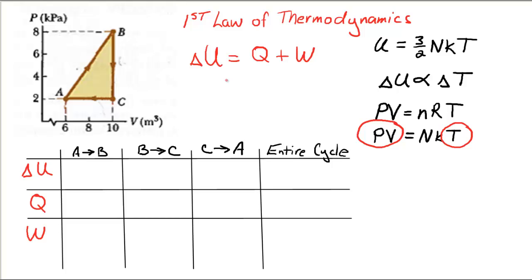So using the product of P times V, we can rank which temperature is the highest, A, B, or C. So if we quickly look at our diagram, we see that PV at location A, and let's not worry about the kilopascals for now, let's just have a look at the numbers. PV at A is about 12, 2 times 6. PV at B is 80, 8 times 10. And PV at C is 20, 2 times 10.